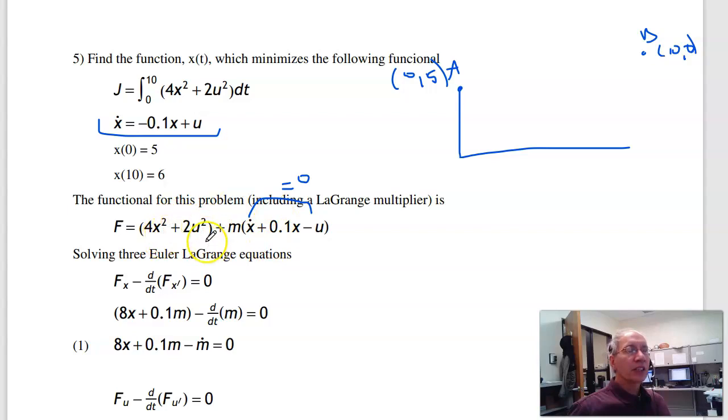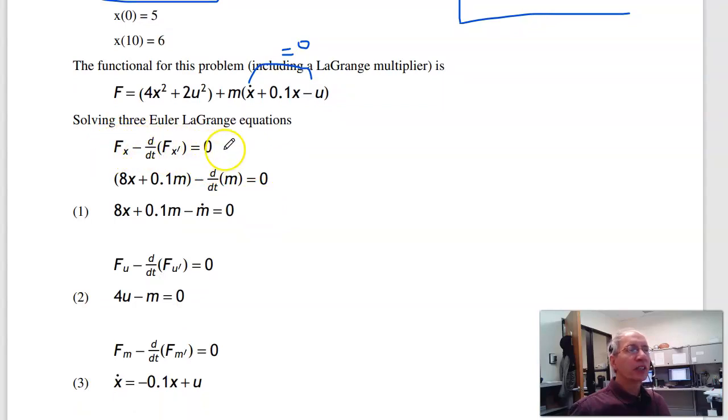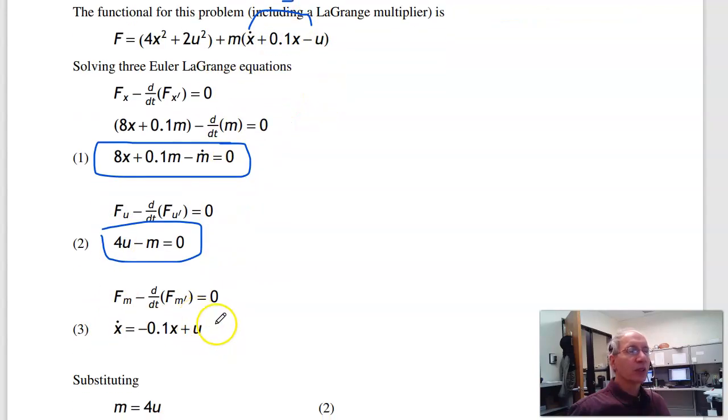To do that, I've got x, u, and m. That means three sets of Euler-Lagrange equations. The first one, the Euler-Lagrange equation with respect to x has to be satisfied. ∂f/∂x gives you 8x and 0.1m minus the full derivative with respect to t of ∂f/∂x_dot, that gives you this term. Differentiating, I get one equation for three unknowns. The Euler-Lagrange equation with respect to u has to be satisfied. That gives you 4u - m. Second equation.